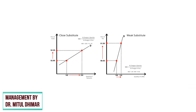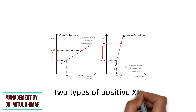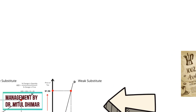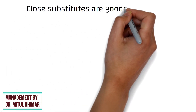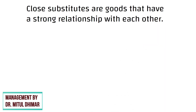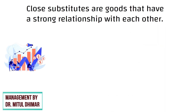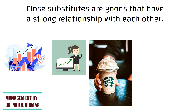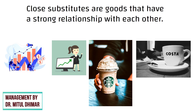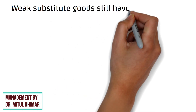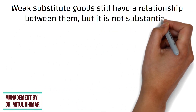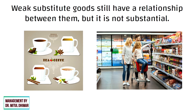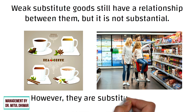As we can see from the charts, there are two types of positive cross elasticity of demand: close substitutes and weak substitutes. Close substitutes are goods that have a strong relationship with each other, so an increase in the price of one good strongly affects the demand of the other — for example, an increase in the price of Starbucks will lead to an increase in demand for Costa coffee. By contrast, weak substitute goods still have a relationship between them, but it is not substantial. For example, ordinary tea and coffee in the supermarket are not widely exchanged for one another, however they are still substitute goods.